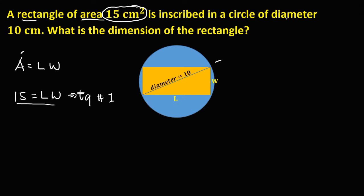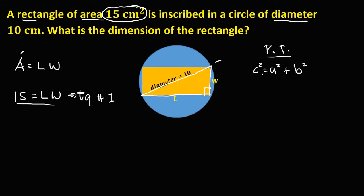To find the second equation from the given diameter: in the figure, the diameter is the hypotenuse, and we have the width and the length forming a right triangle. Since it is a right triangle, we can use the Pythagorean theorem. The formula is c squared equals a squared plus b squared, where c is the hypotenuse — the longest side, opposite the 90 degrees. So c is the diameter, and we can set l as a and w as b.